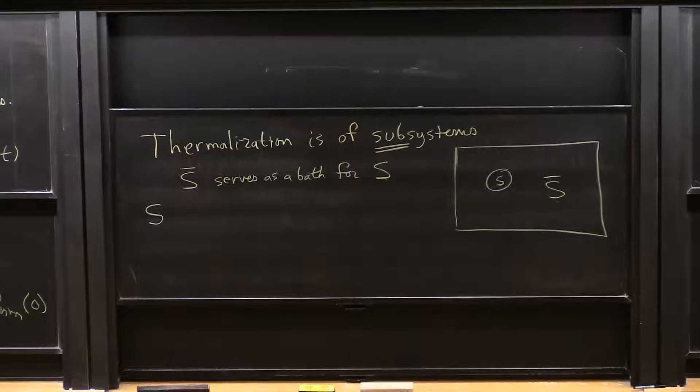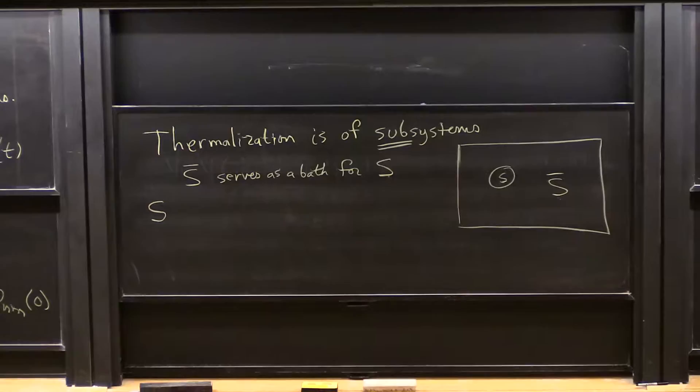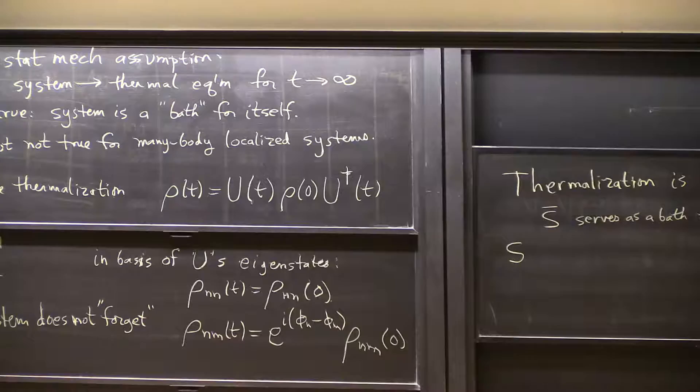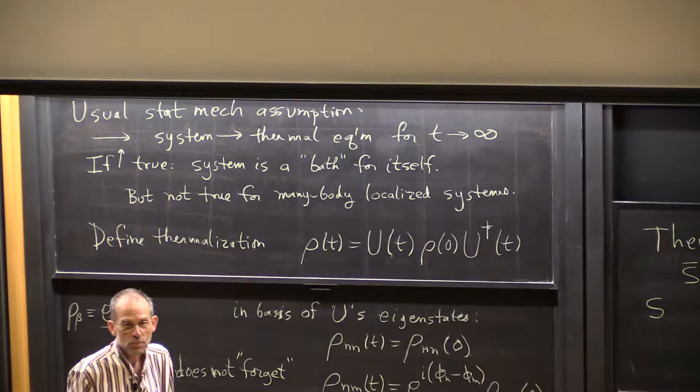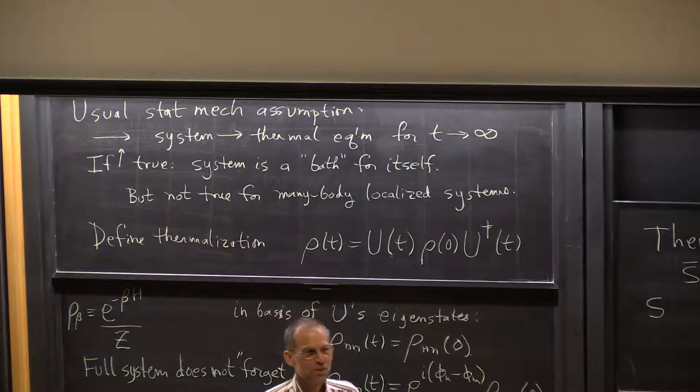You said the full system doesn't forget — what do you mean by that? Any information that's in the initial state is still there in the full system. But that's always the case. Yes, exactly — it's a trivial statement. But often forgotten. Because you naively say the system goes to thermal equilibrium — oh, it went to a Boltzmann distribution. Okay, that would be a naive answer, and it's contradictory to very basic physics. Trivial but forgotten, even though obvious.